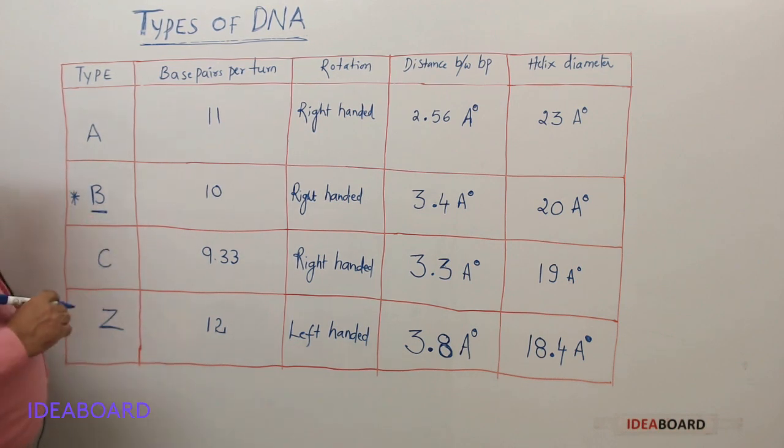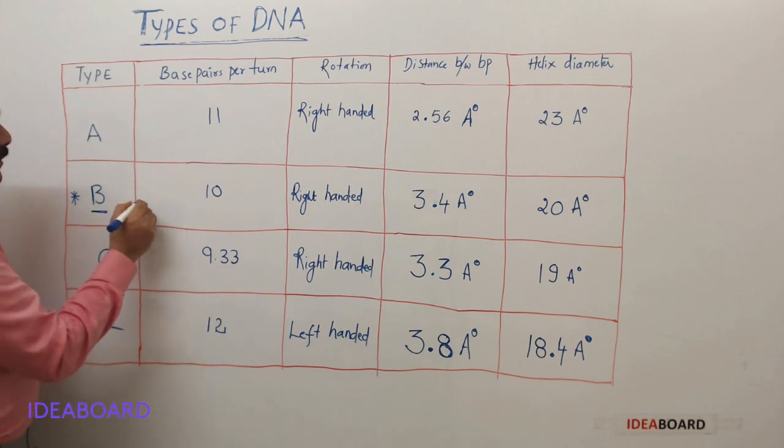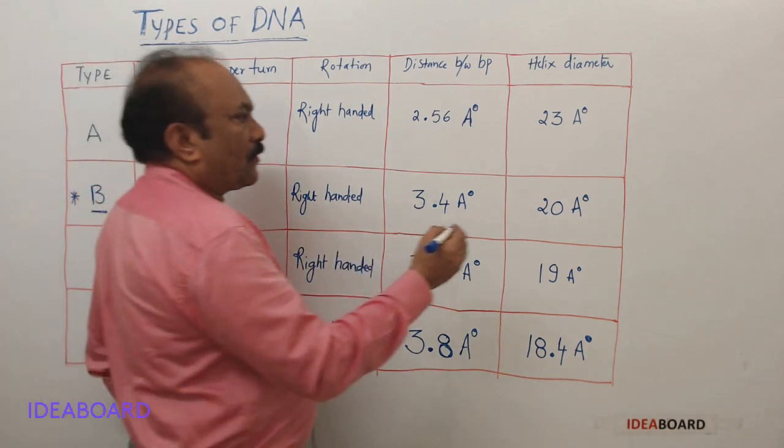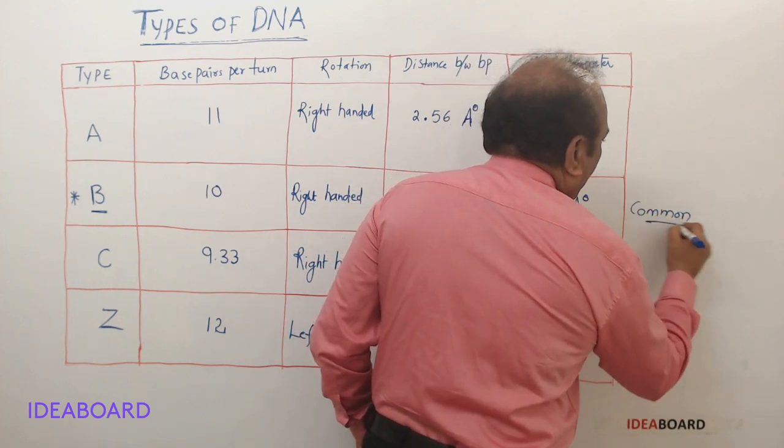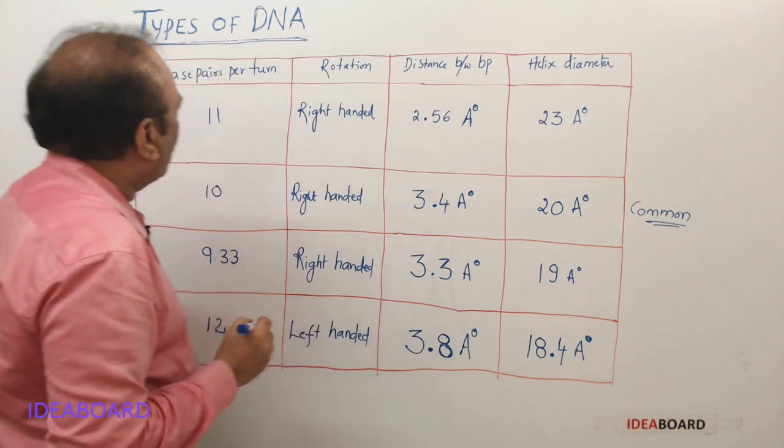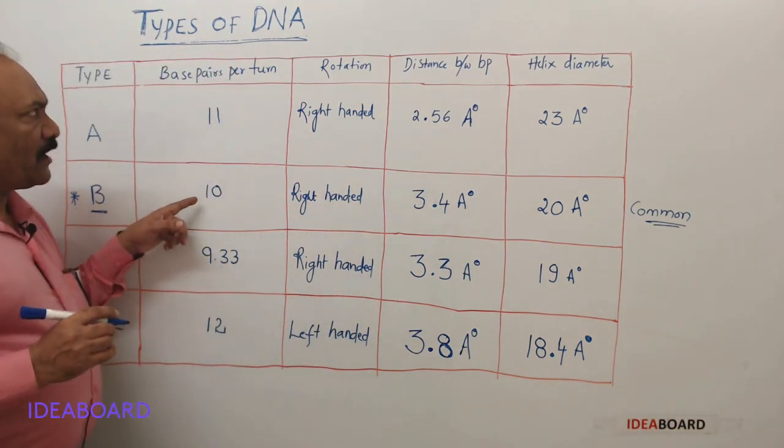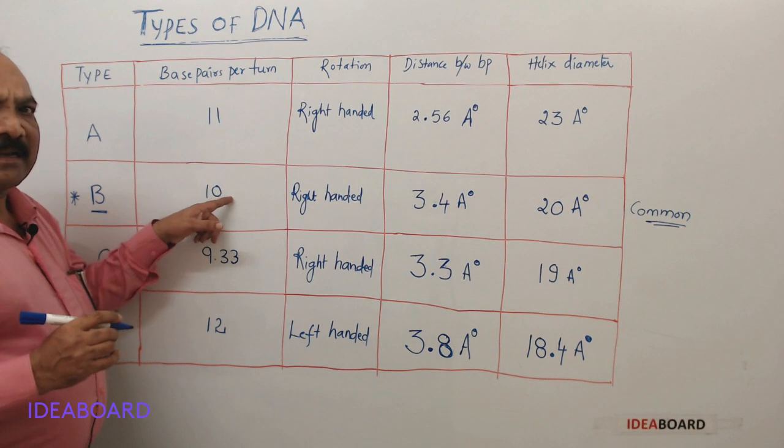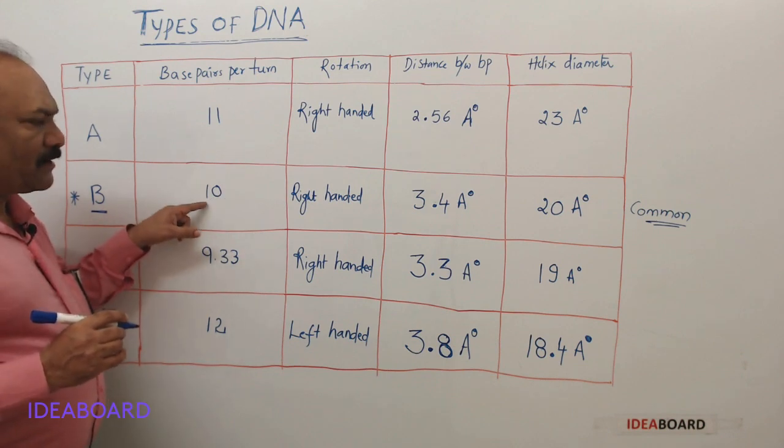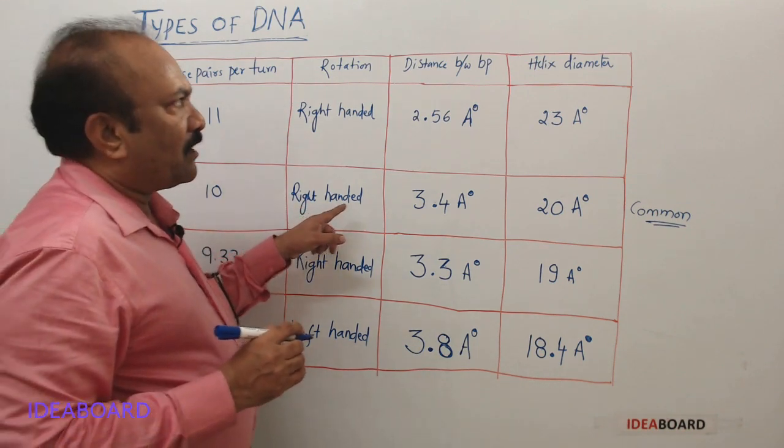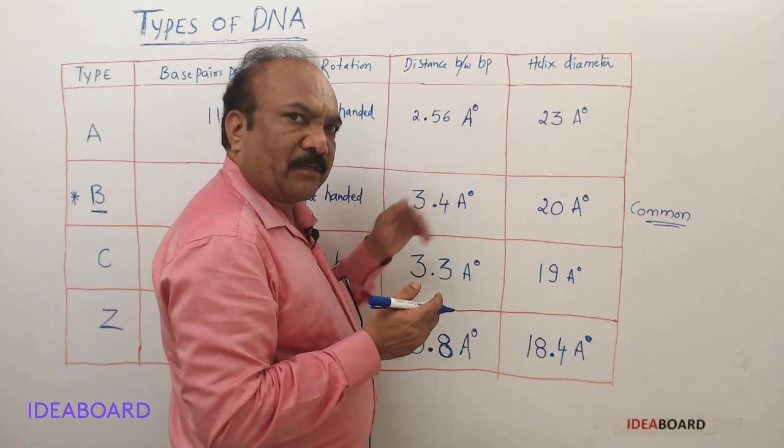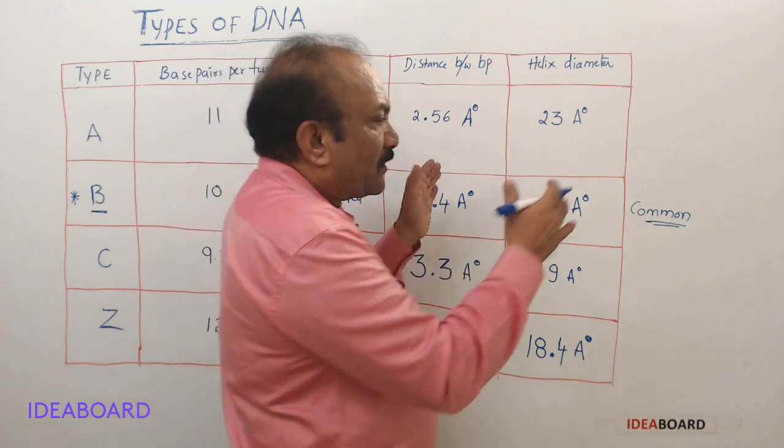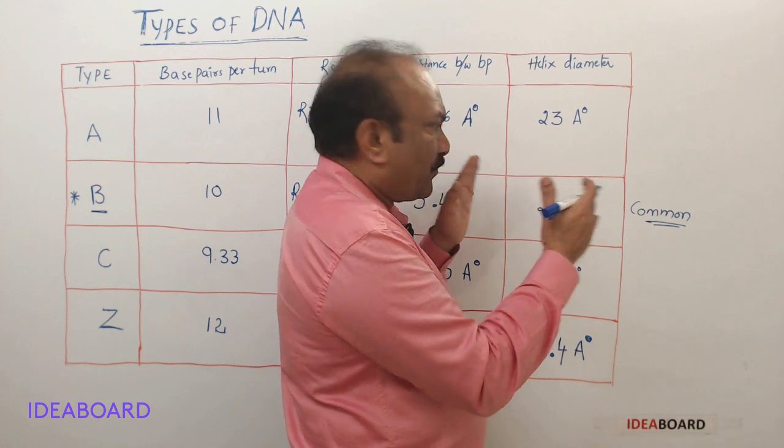This is Watson and Crick DNA, which is the common DNA. We know that this B-DNA will have 10 base pairs per turn—that means in one coil you will find 10 base pairs. It is right-handed helix, and the distance between two base pairs will be 3.4 angstrom units, and the diameter or width of DNA is 20 angstroms.